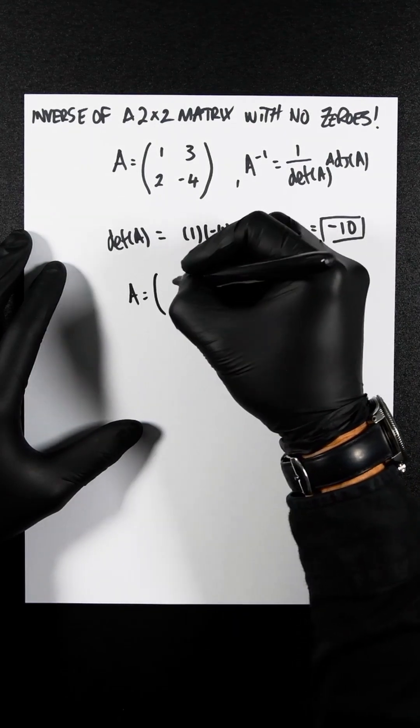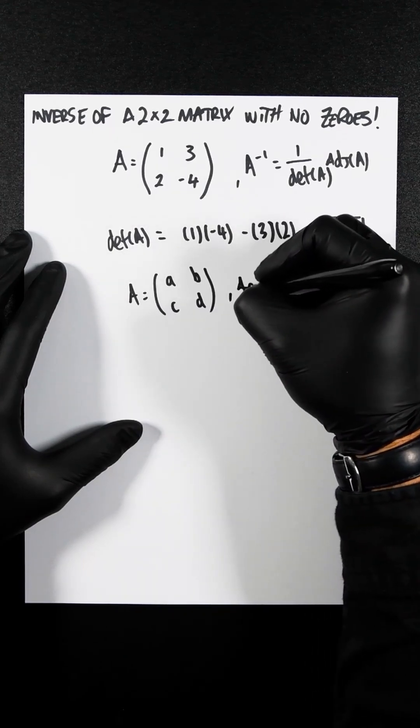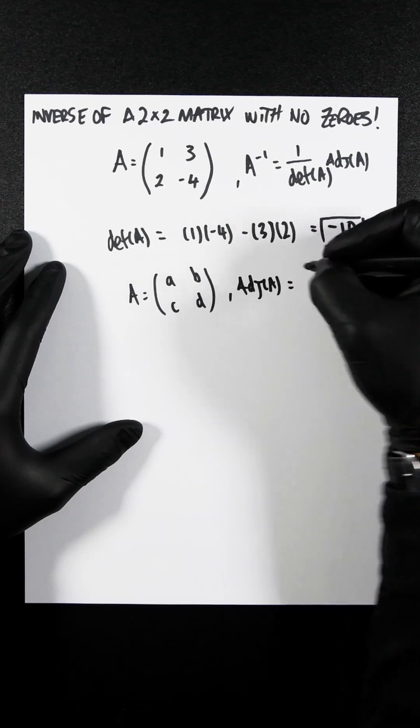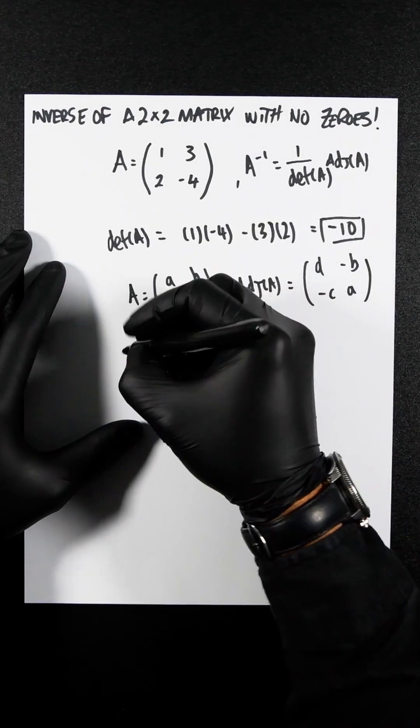So if this matrix is A, B, C, D, the adjugate of A would be D, A, minus B, minus C. So let's do that.